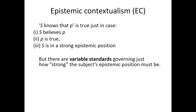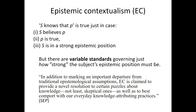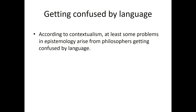One of the strong reasons to accept epistemic contextualism - this is a quote from the Stanford Encyclopedia of Philosophy - is that it's supposed to solve certain puzzles about knowledge, especially skeptical puzzles. How can we know that we have hands if we don't even know we're not a brain in a vat? EC is also supposed to fit within our everyday knowledge-attributing practices, explaining why we say certain things and not others.